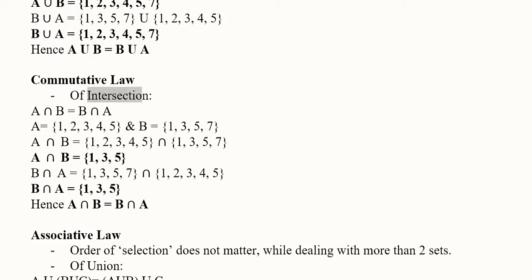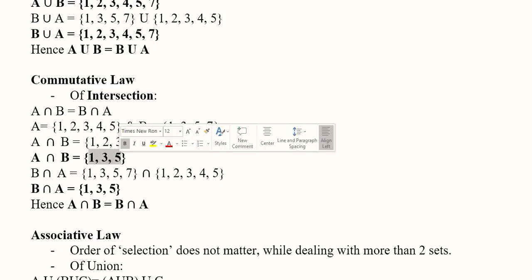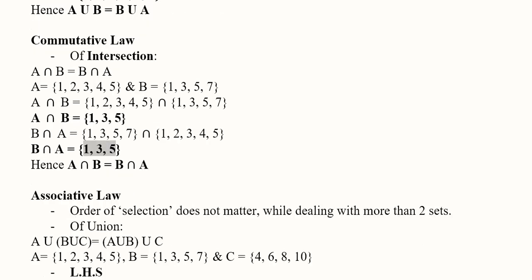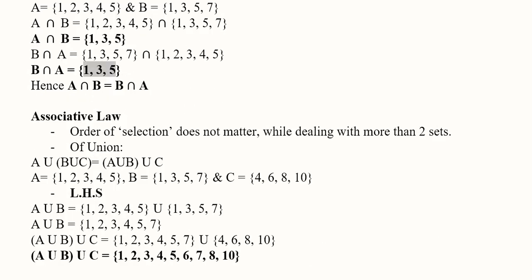When it comes to intersection, we can repeat the same exercise. In this case we write the common elements, and the common elements are the same whether we compare A with B or B with A. Their order is ascending, so the answer is the same for both. This was the first law — the commutative law.